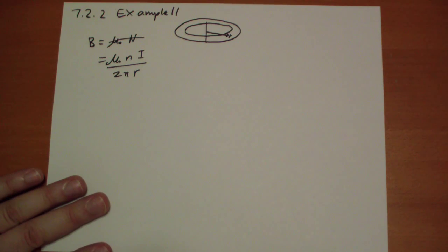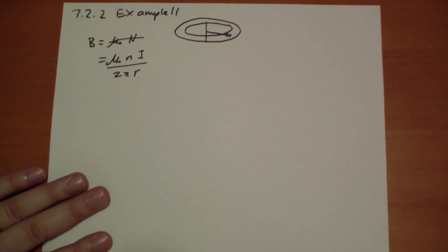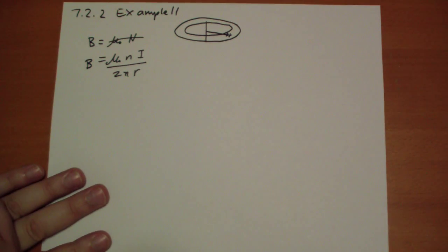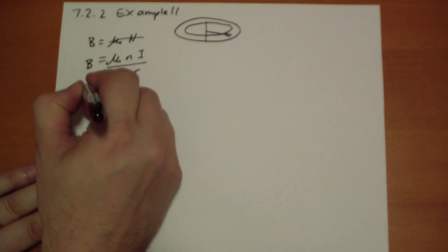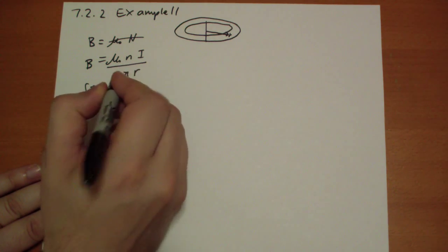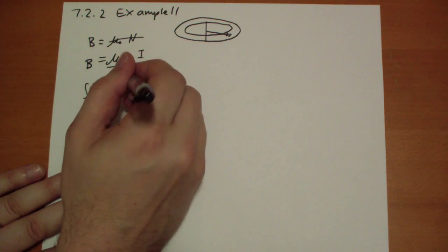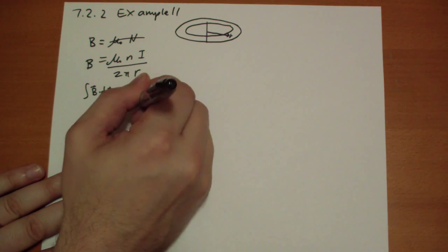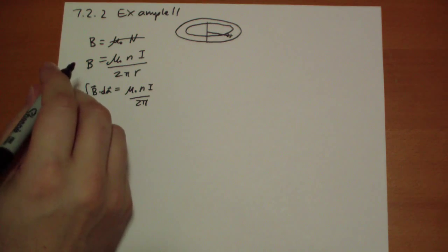So the flux through a single turn. So find the self-inductance. So through a single turn, we're going to have B dot dA. Well that's just mu naught n, all these terms are constant, over 2 pi.